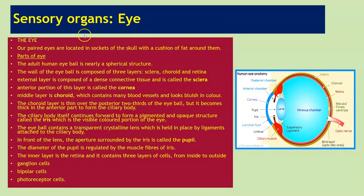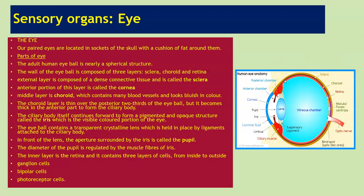Now let us have a look at our important sense organs. First, we will talk about the eye. Our paired eyes are located in sockets of the skull with a cushion of fat around them. The adult human eyeball is merely a spherical structure. The wall of the eyeball is composed of three layers: the sclera, choroid, and retina.